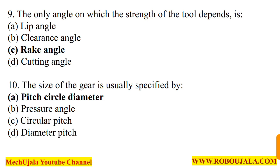There are two types of rake angles: positive and negative. In question number 10, they are asking: the size of a gear is usually specified by what? Remember which circle diameter defines gear size. Option number A is the correct option for this question.